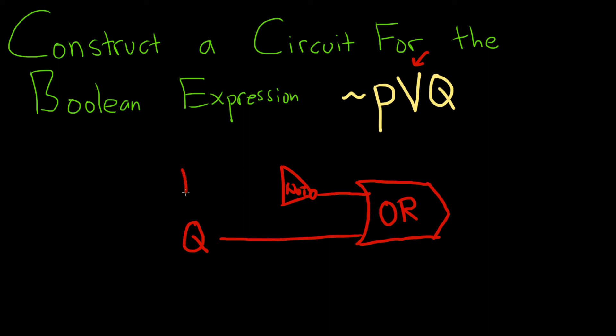And then P goes into that gate. So P goes into the NOT gate. It becomes NOT P. So then you have NOT P and Q going into the OR gate. And you end up with your logical expression, your Boolean expression.